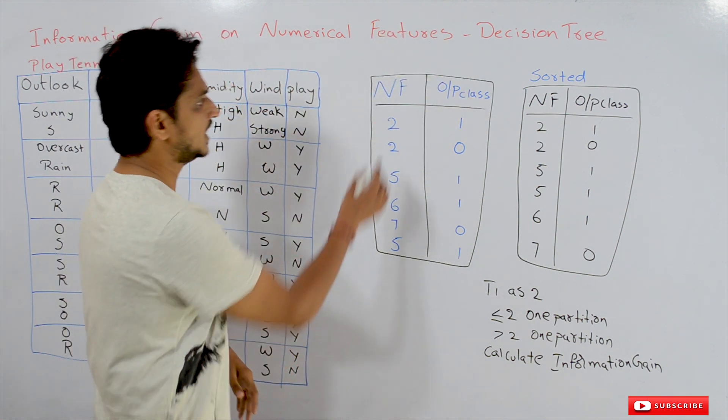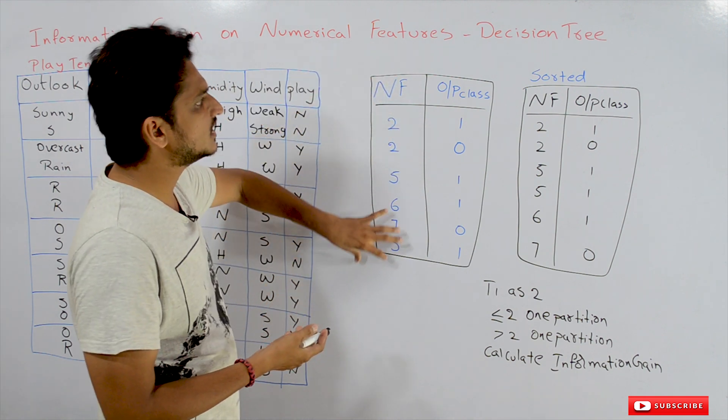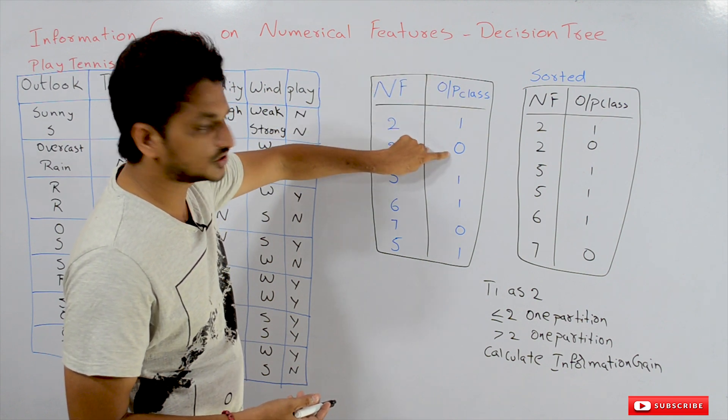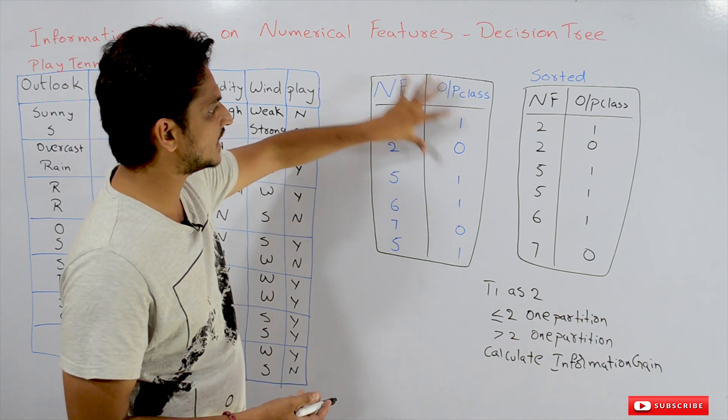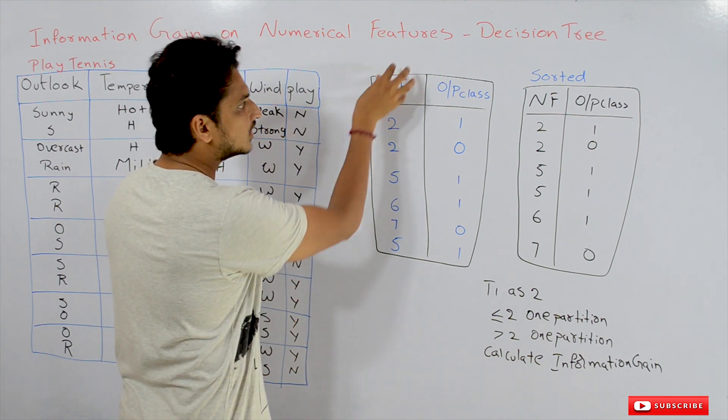This is our example dataset. NF means numerical feature. We are taking one numerical feature and one output class. 1 means positive class, 0 means negative class. We have to calculate information gain on this column.